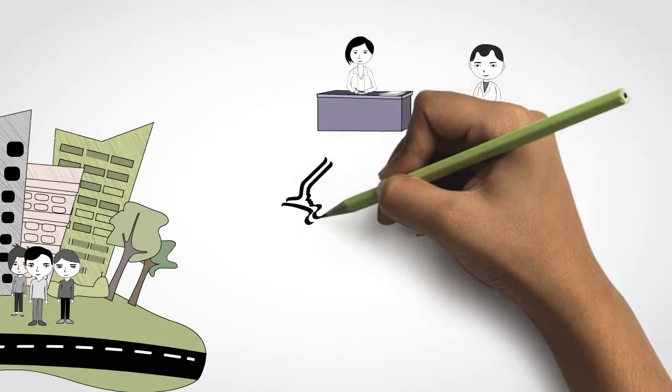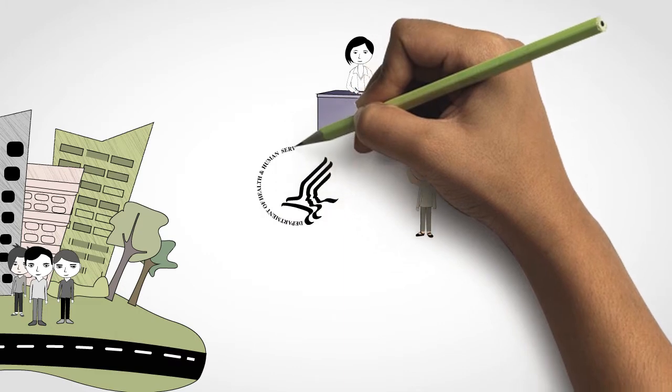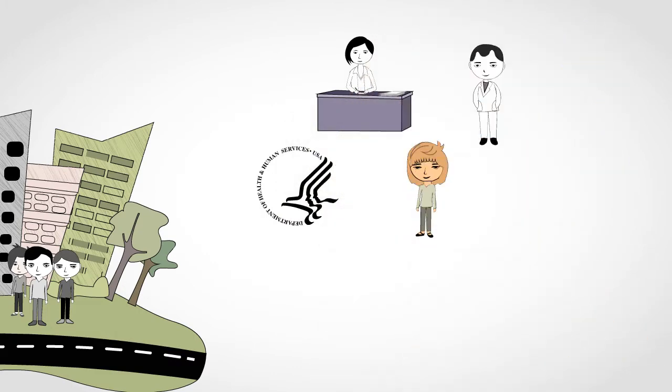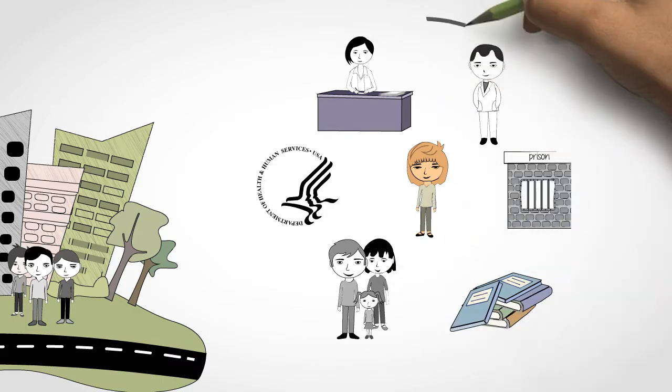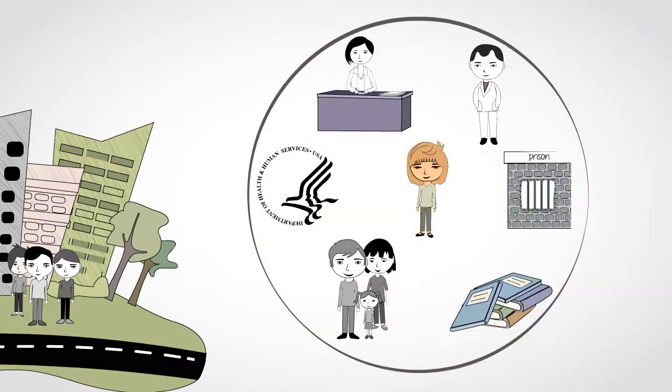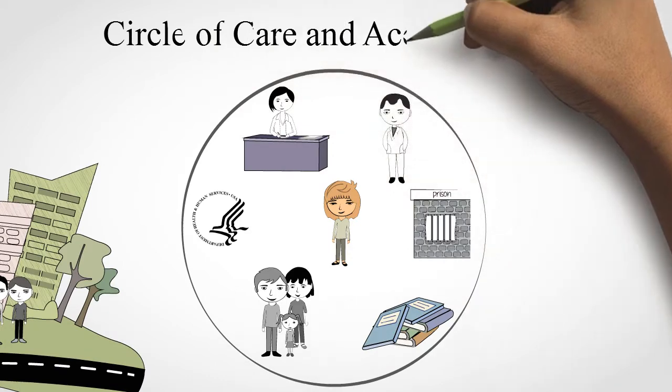and potentially accountable knowledge workers across multiple agencies that could include HHS, Child and Family Services, Education, Justice, and of course her own circle of support network, her circle of care and accountability.